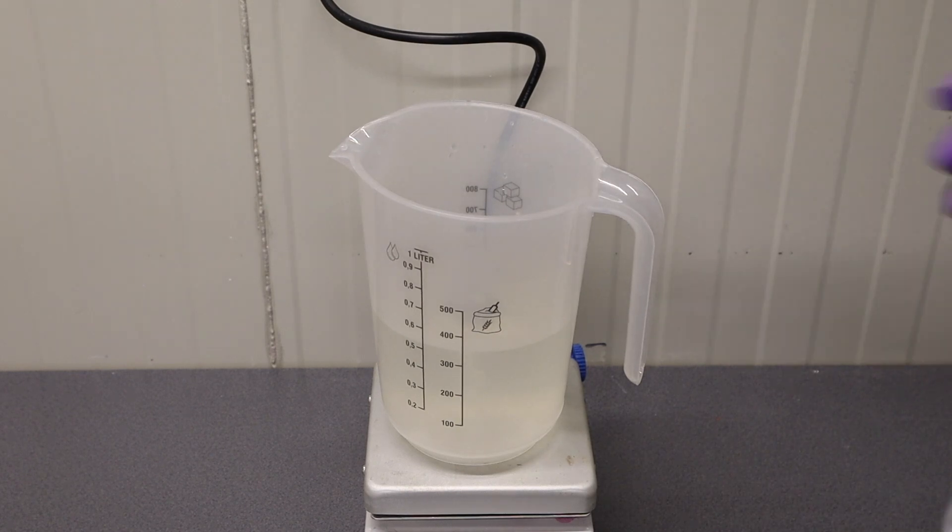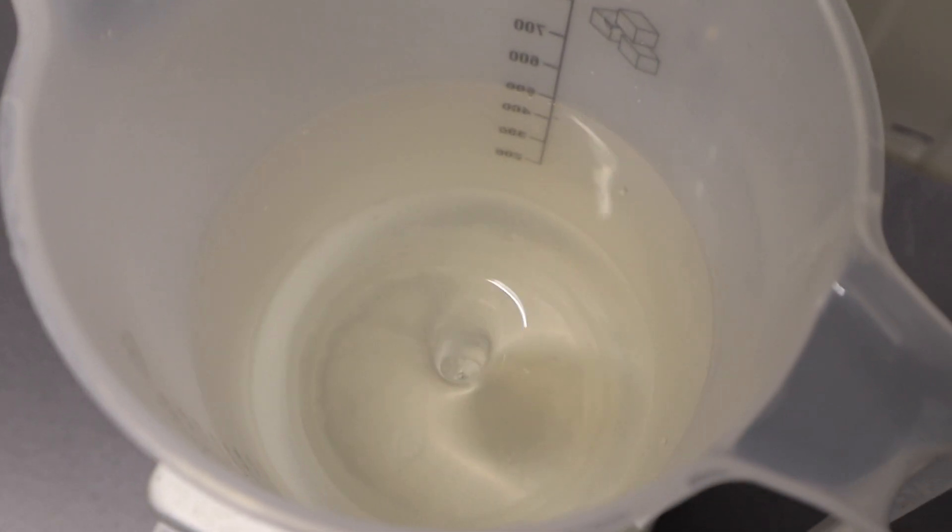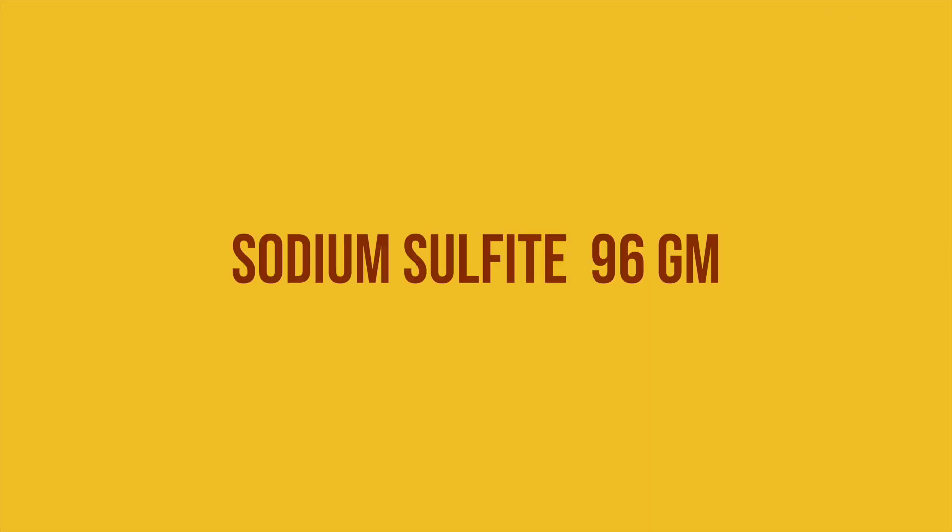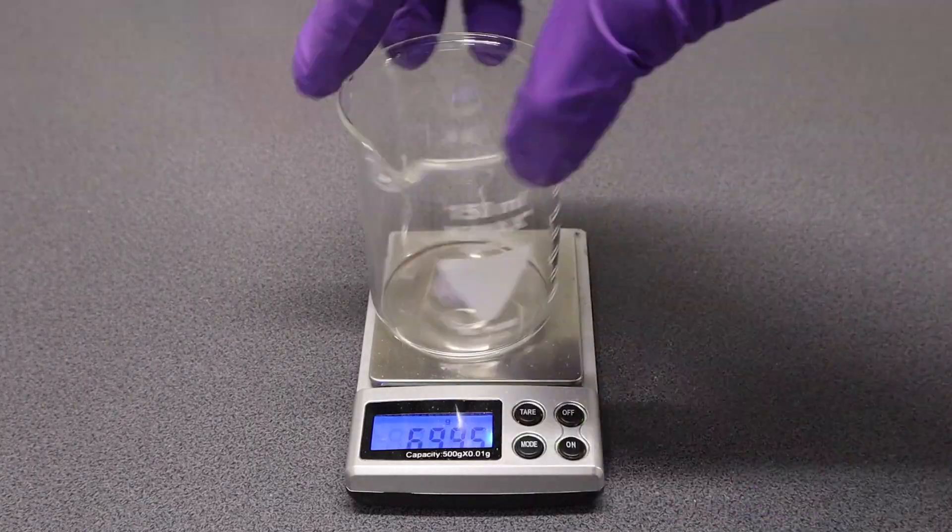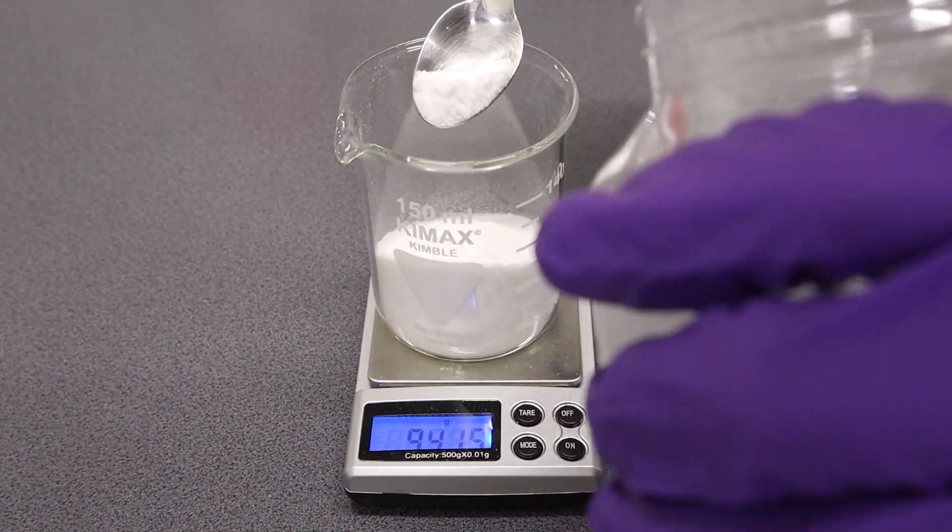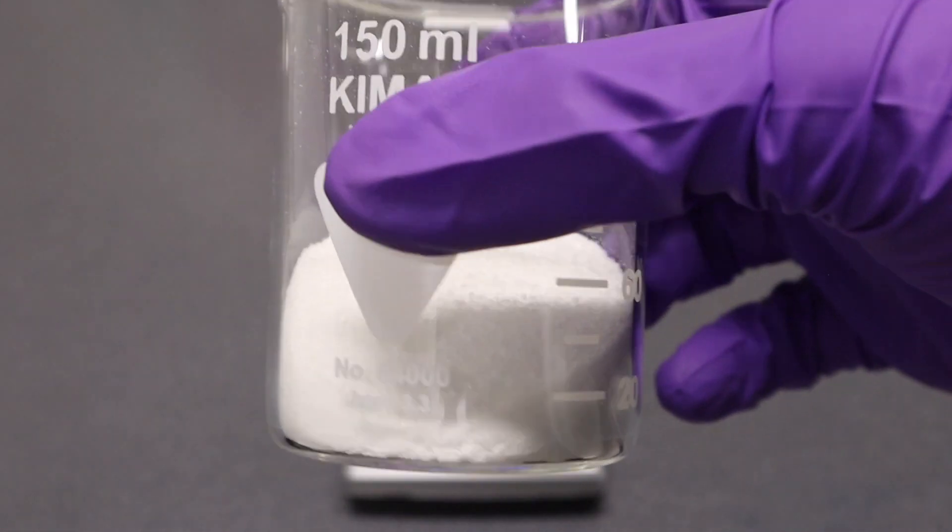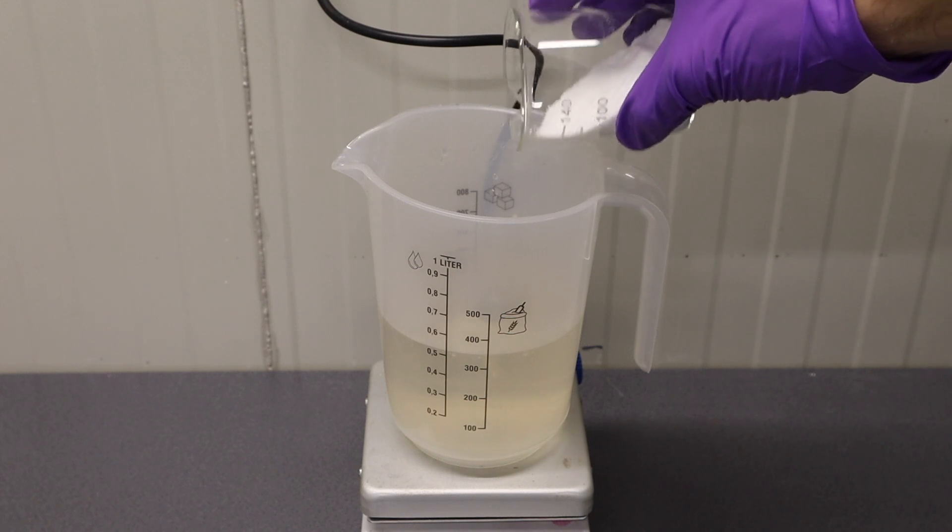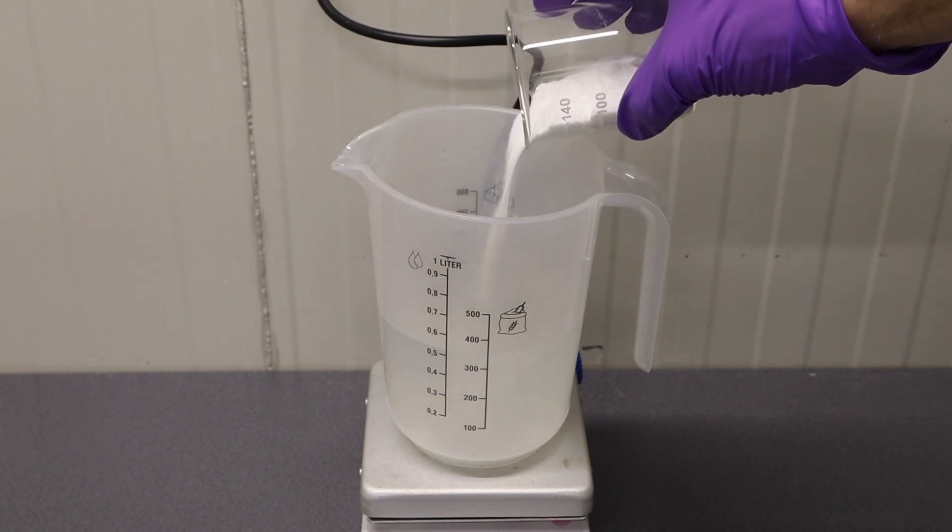When I add in all the Metol you can see that the solution got kind of brownish color to it. When Metol has completely dissolved you can proceed by adding 96 grams of sodium sulfite and again you need to wait until it's completely dissolved. When I add in the chemical you can instantly see how the solution turns white.